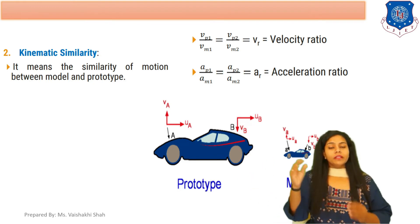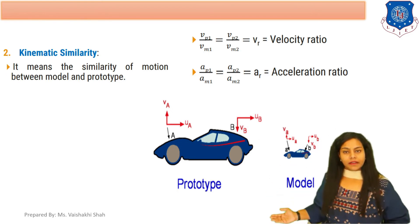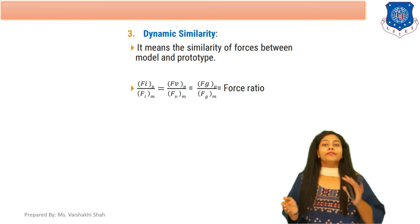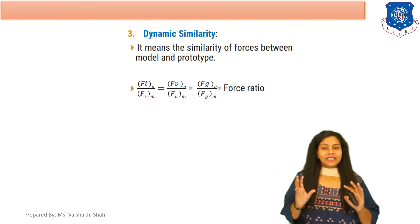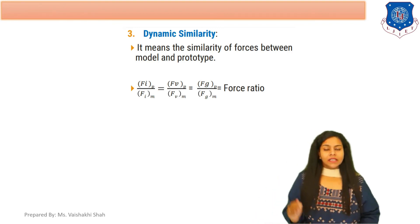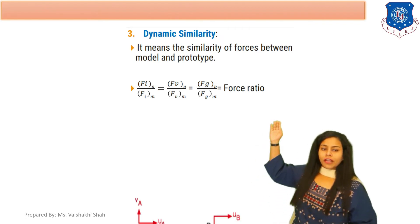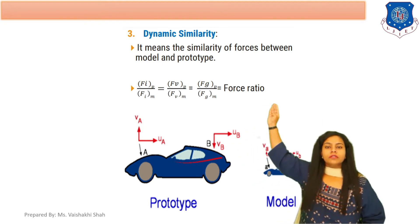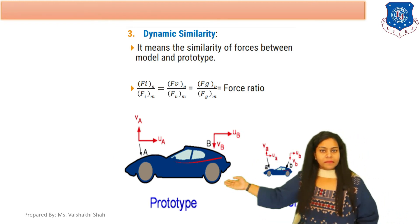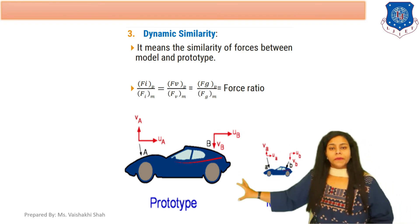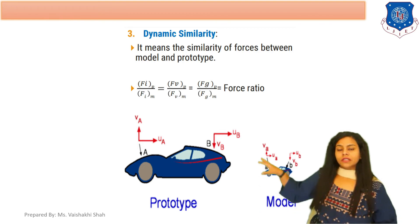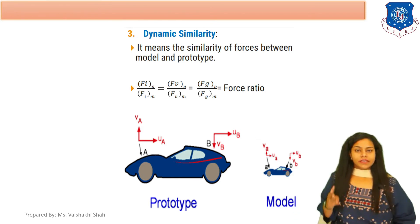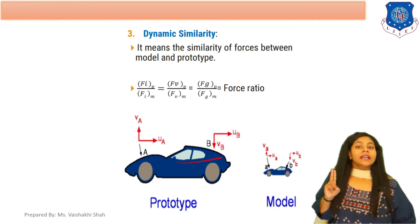The third type of similarity is dynamic similarity, which means similarity of forces. If the forces in the prototype and model are similar, it is called dynamic similarity. We indicate force ratio as fi = fip/fim — force in prototype divided by force in model. As you can see, this is the image of the prototype and this is the image of the model. If there are similar forces in both, that is called dynamic similarity.